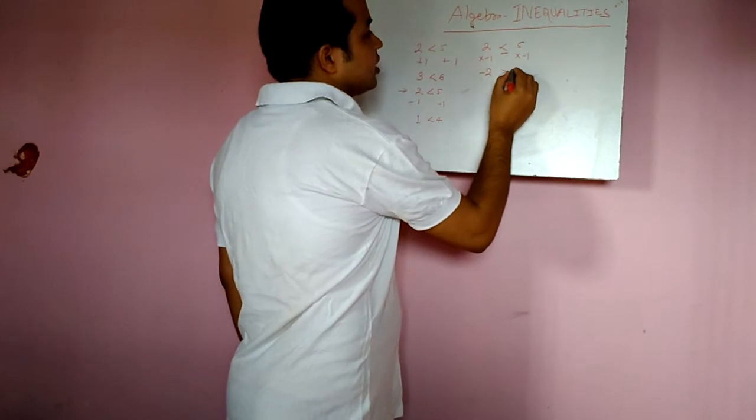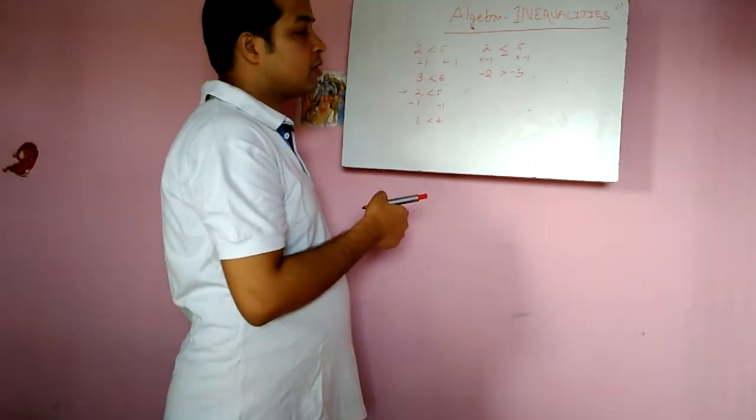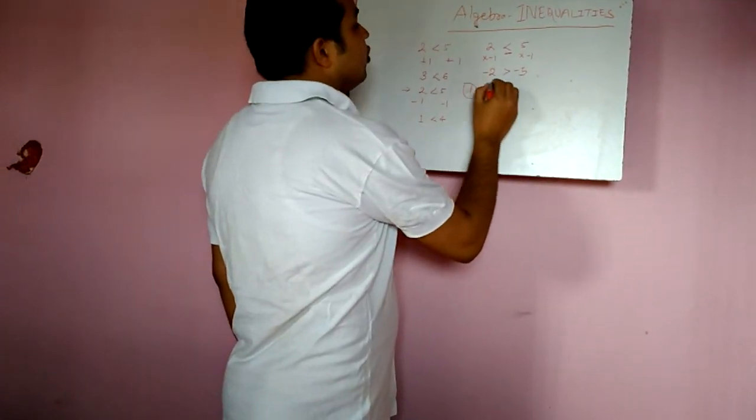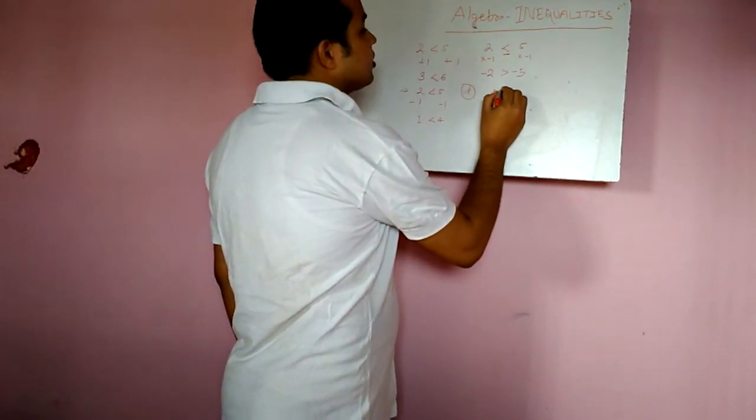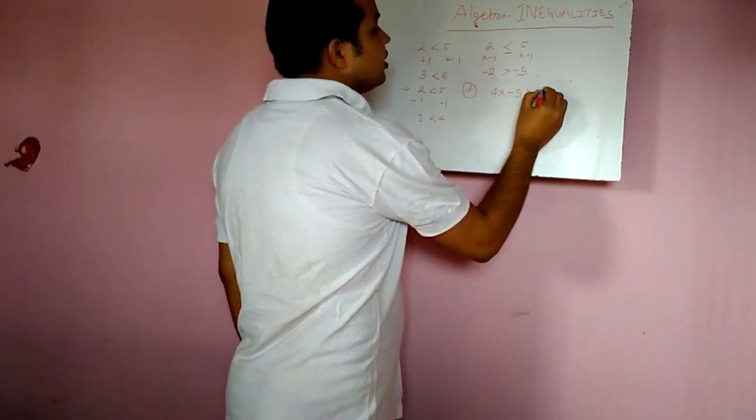The minus 2 will be greater than minus 5. And the same thing, we will take an example like 4x minus 5 is greater than 10.